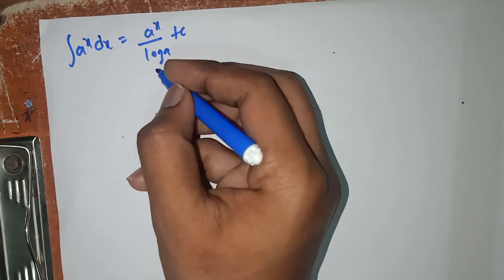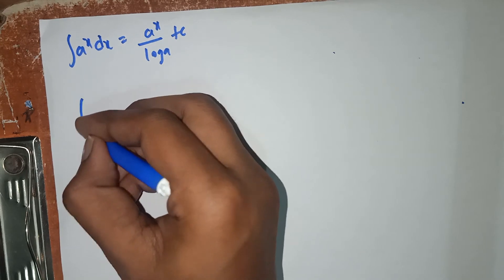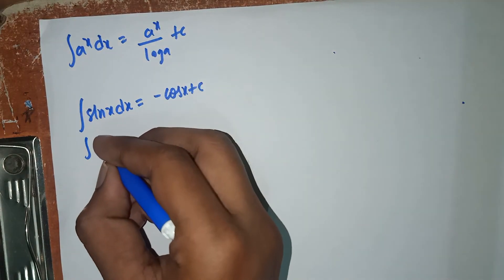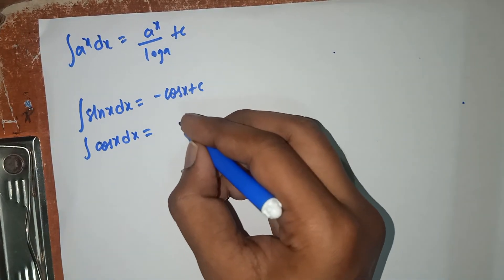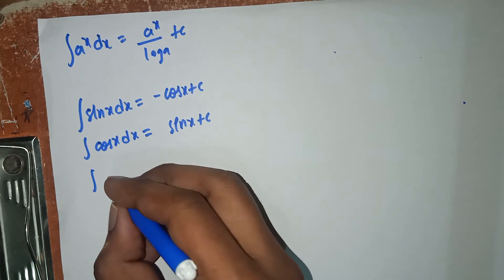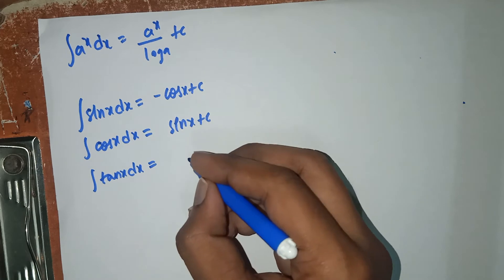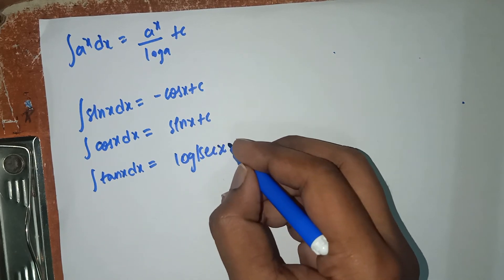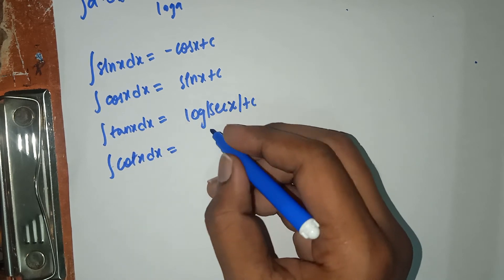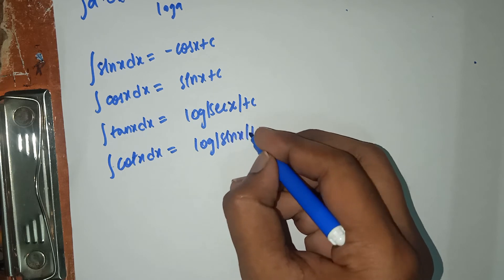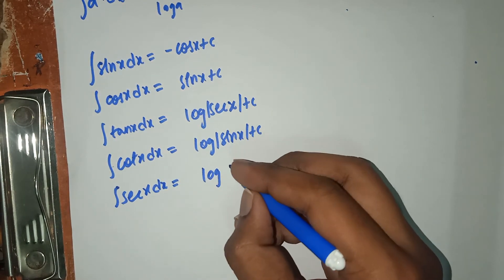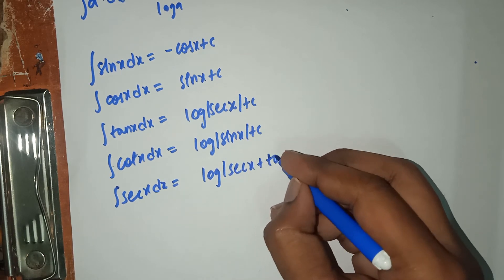Integral of a power x dx equals a power x by log a plus C. Integral of sin x dx equals minus cos x plus C. Integral of cos x dx equals sin x plus C. You have to remember these trigonometric integrals. Integral of tan x dx equals log mod sec x plus C. Integral of cot x dx equals log mod sin x plus C. Integral of sec x dx equals log mod sec x plus tan x plus C.